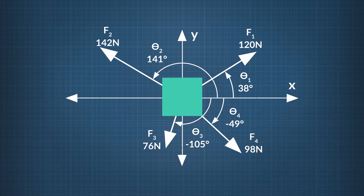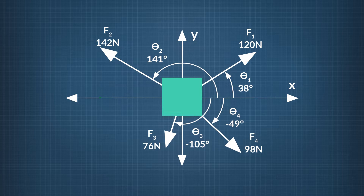Let's look at another example. A cross beam in the frame of a house experiences forces in four directions. The beam, shown from its end, is designed to withstand a maximum net force of 30 newtons. What is the net force on the beam from the forces shown, and will the beam be able to handle the force? To solve this question, we will want to break the four applied forces into their x and y components, add them up, and then use the Pythagorean theorem to find the net force magnitude, and our tan function to find the net force direction.